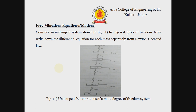Now we discuss about the multi degree of freedom system equation of motion. Consider an undamped system having n degrees of freedom. The figure shows n masses m1, m2, m3, and mn, continuously attached to each other by springs whose stiffnesses are k1, k2, k3, and kn. We write down the differential equation for each mass separately from Newton's second law.